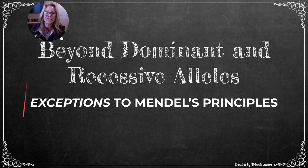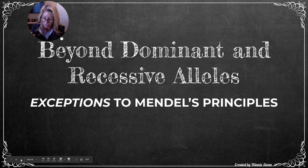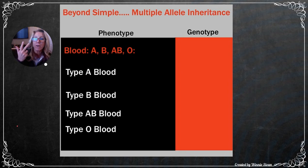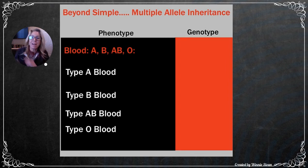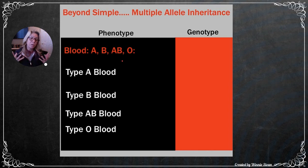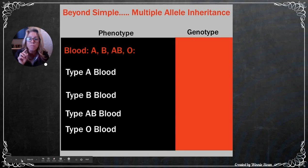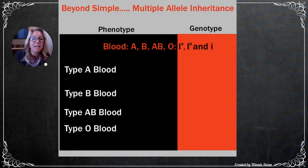Now let's move beyond dominant and recessive alleles to exceptions to the rule — section 23.2. First: blood type. The phenotypes are A, B, AB, and O. How do you get four phenotypes? Unlike pea plants that were tall or short, blood type involves multiple alleles: big I superscript A, big I superscript B, and little i. Big I is dominant over little i.